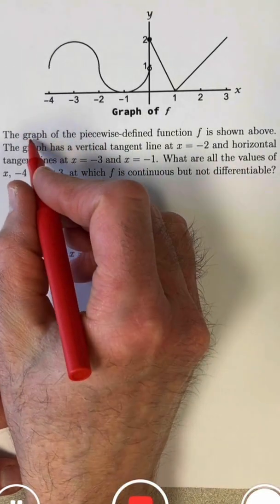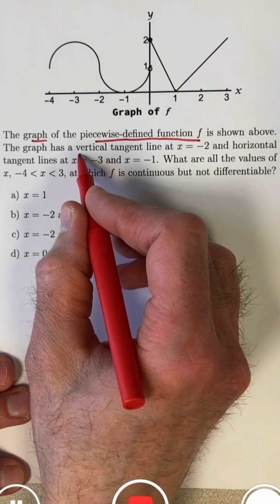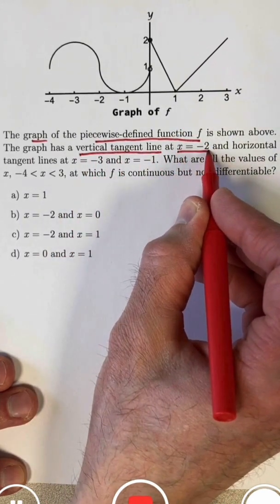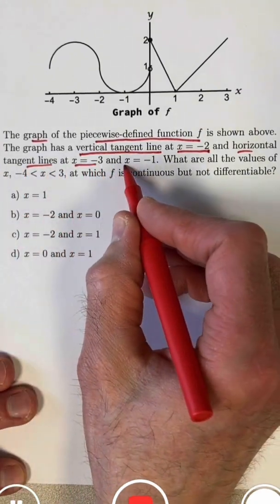We're given the graph of a piecewise defined function f that you see right here. The graph has a vertical tangent line at x equals negative 2, and a horizontal tangent line at x equals negative 3 and x equals negative 1.